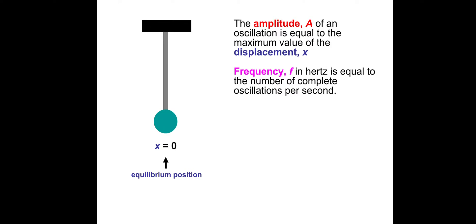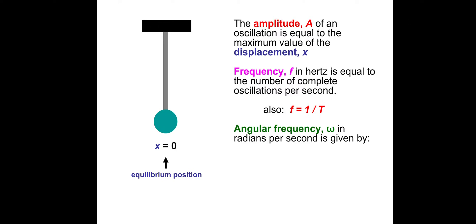So frequency f in hertz is equal to the number of complete oscillations per second. And remember that frequency is one over the time period. Angular frequency, omega, in radians per second, is given by omega = 2πf. And of course, since frequency is one over the time period, omega is also 2π over T. We should know this from circular motion.